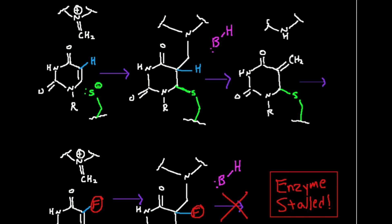To give an example of how this works, we're going to look at part of the mechanism of one important enzyme called thymidylate synthase. Normally, we take this molecule — deoxy-UMP — and through a few extra steps convert it to deoxy-TMP. This is actually how you turn uracil into thymine for DNA synthesis. The R group here is the deoxyribose.